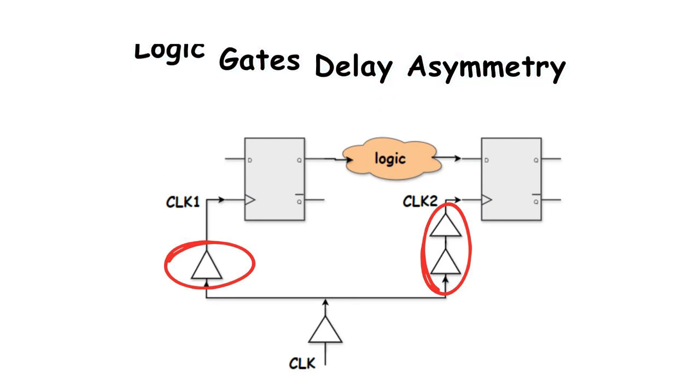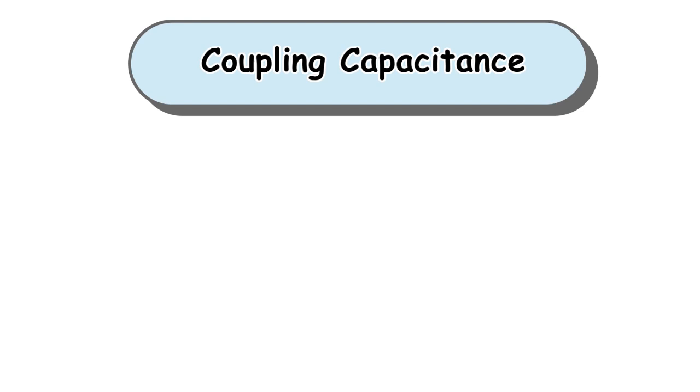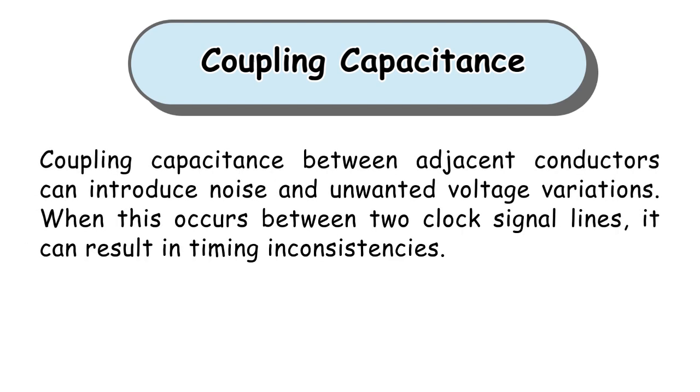Also from the reasons of clock skew is the coupling capacitance, where coupling capacitance between adjacent conductors can introduce noise and unwanted voltage variations. When this occurs between two clock signal lines, it can result in timing inconsistencies.